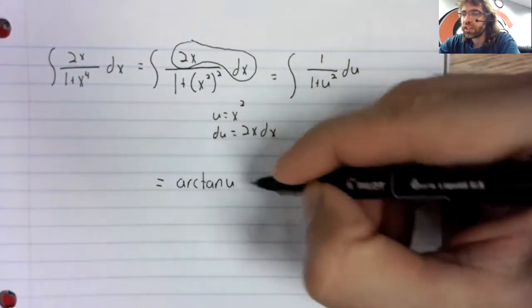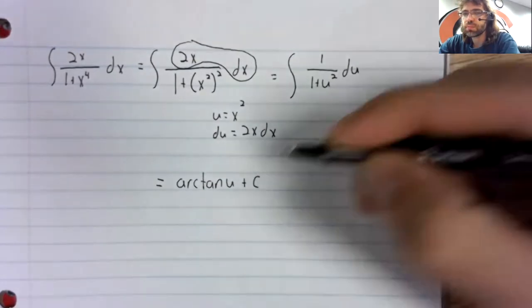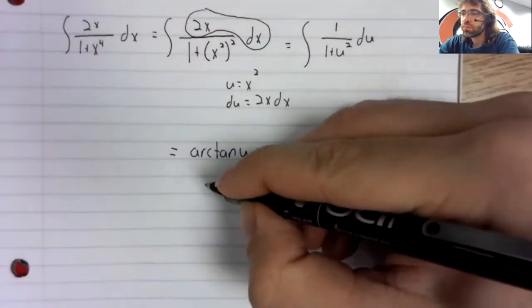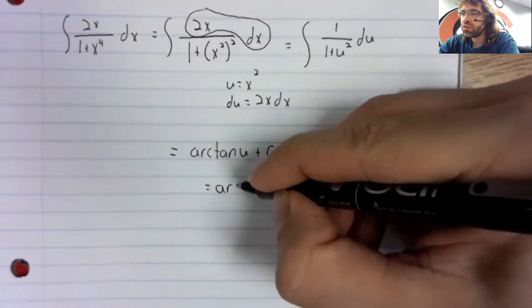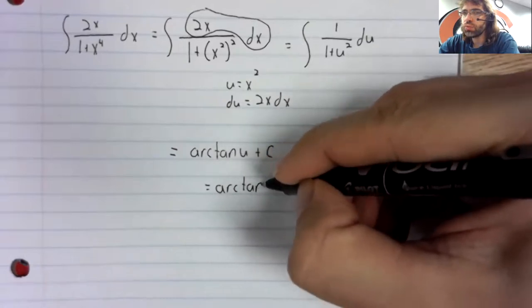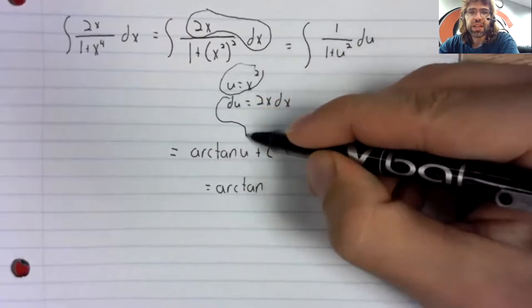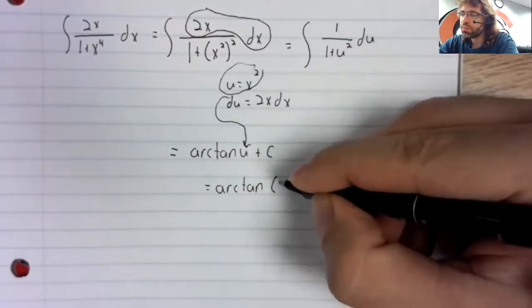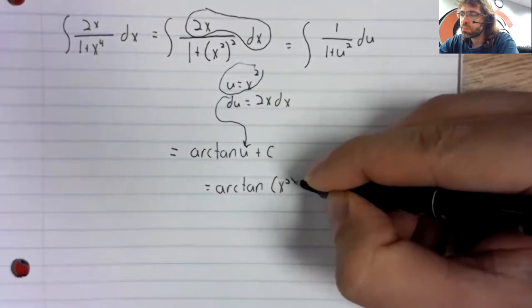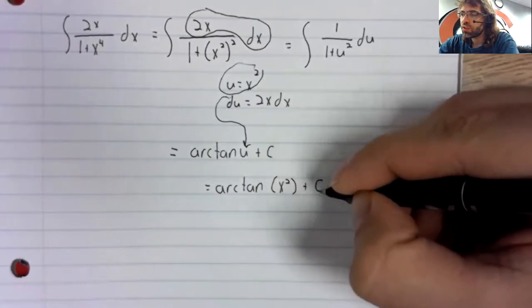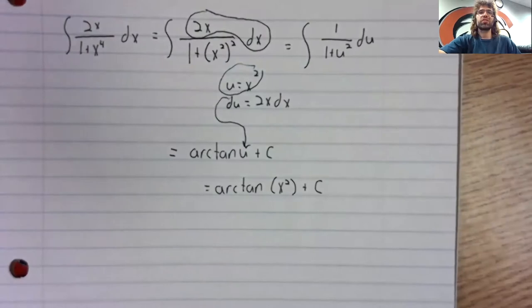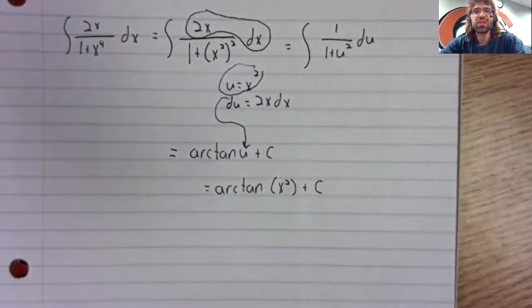This is one over 1 plus u squared du. That's the arc tangent. And u is x squared. So that's the arc tangent of x squared plus c.